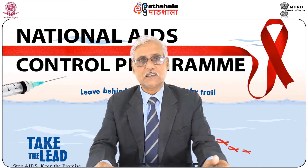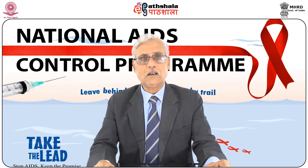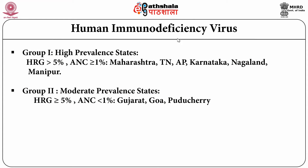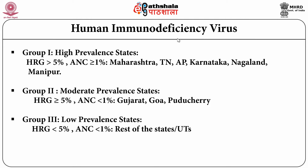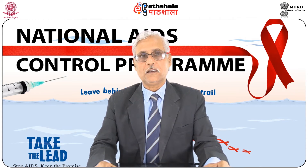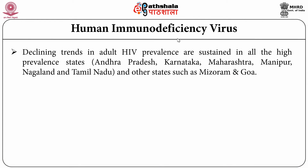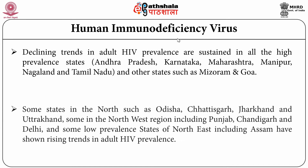According to the level of prevalence, disease conditions can be categorized. High prevalence states in India are those where the high-risk group prevalence is more than 5% and antenatal care positivity is more than 1%: Tamil Nadu, Andhra Pradesh, Karnataka, Nagaland, and Manipur. Moderate prevalence states, where prevalence in the high-risk group is more than 5% but antenatal care women is less than 1%, include Gujarat, Goa, and Pondicherry. Low prevalence states have less than 5% in the high-risk group and less than 1% in antenatal care women.